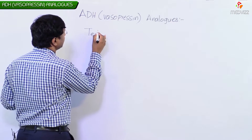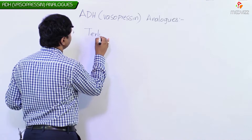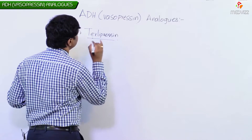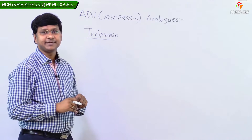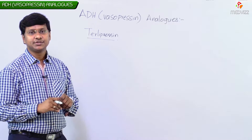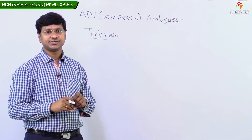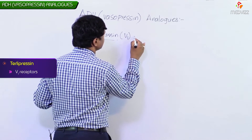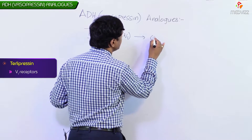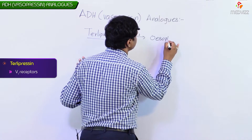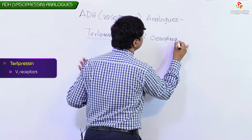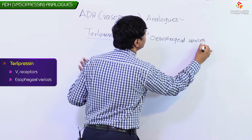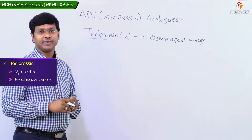The other ADH analogue is Terlipressin. The main action of Terlipressin is on the V1 receptors. By acting on the V1 receptors, Terlipressin is used in the treatment of hematemesis caused by esophageal varices.